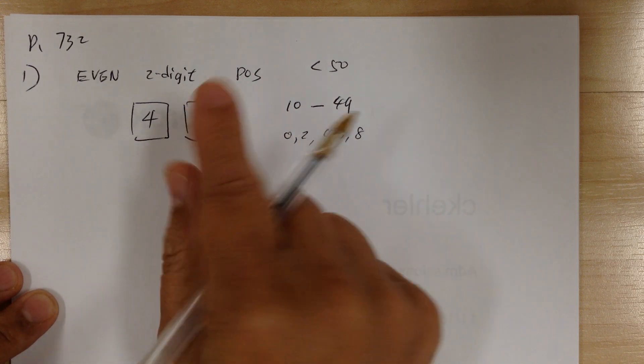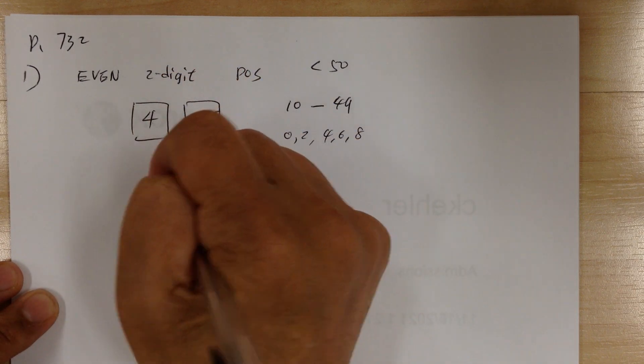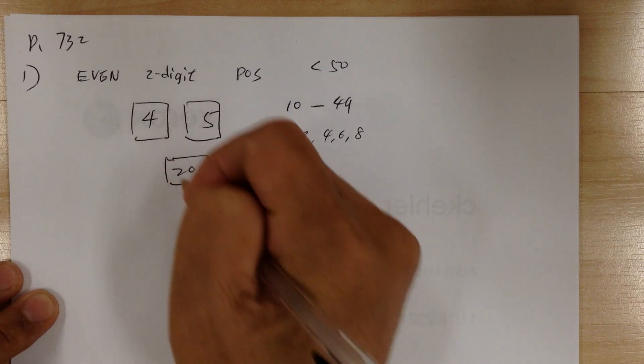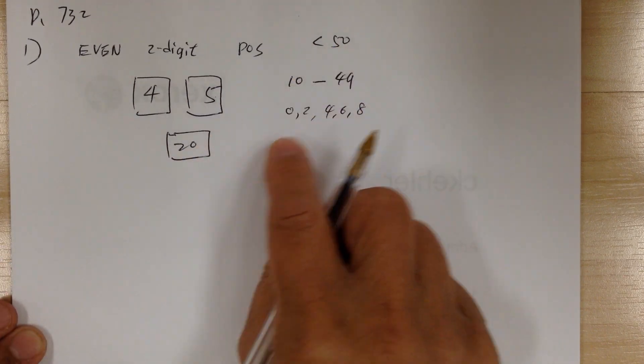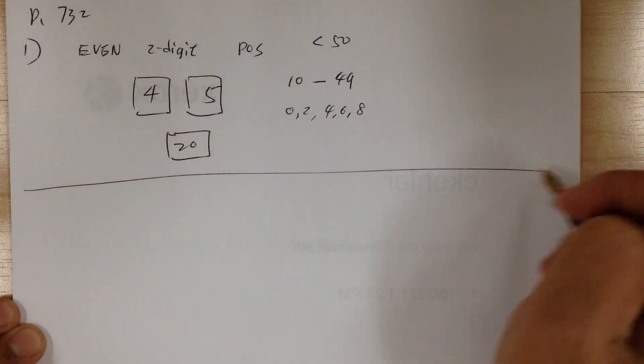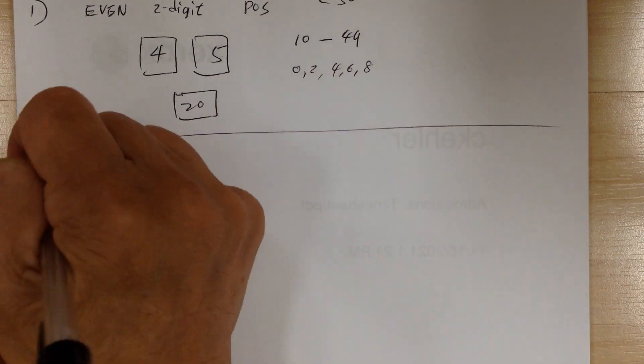So you have to multiply: four times five gives you 20. There are 20 two-digit even numbers less than 50. You could write them all out and count them, but it would take too much time.